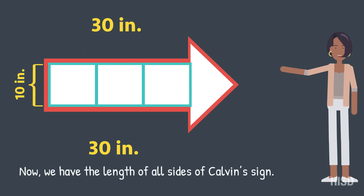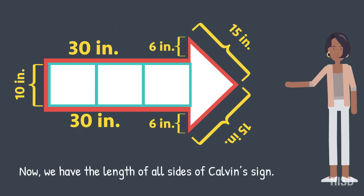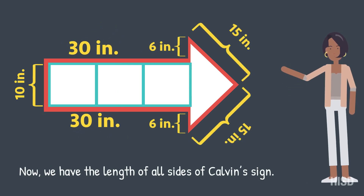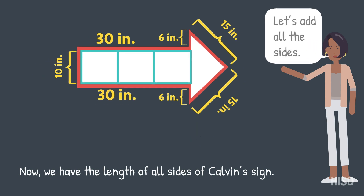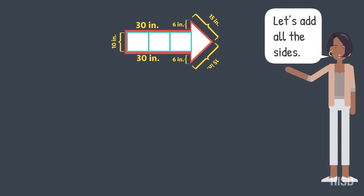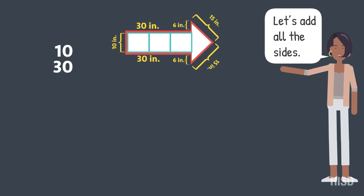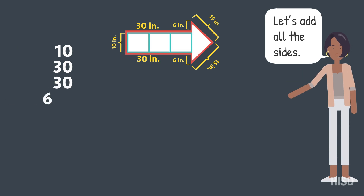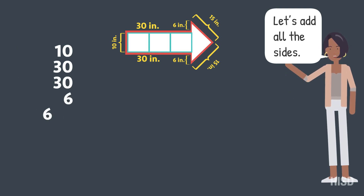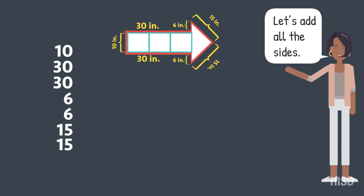Now we have the length of all sides of Calvin's sign. Let's add all the sides: 10 inches plus 30 inches plus 30 inches plus 6 inches plus 6 inches plus 15 inches plus 15 inches.